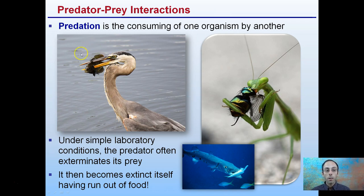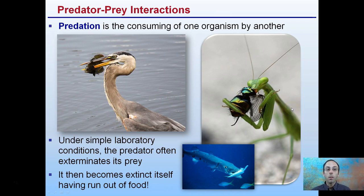If our great blue herons eat all of the sunfish, soon there would be no great blue herons because there would be no food to feed off of. If all our praying mantis consumed all the flies, there would be no praying mantis. We need this predator-prey interaction to occur. While they are consuming other organisms, we don't want to consume them to the point of extinction because then they themselves would become extinct.